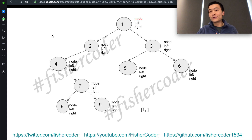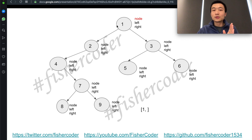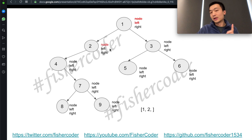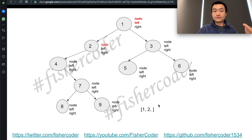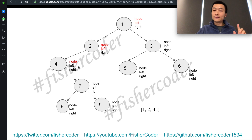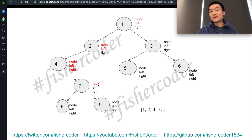Now let's begin. First, we have the root node. We're given access only to the root node, so we put 1 into the final list. Then we go left — left is 2, that's the node, so we put 2 into the list. Then we go to the left of 2, which is 4, and put 4 into the list. We then attempt to access the left side of 4, which is null, so we skip. Then we go to the right side of 4, which is 7, and put 7.